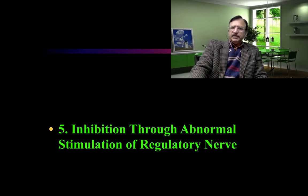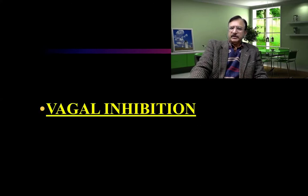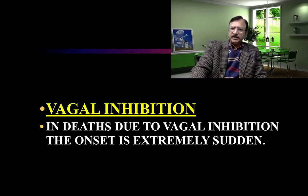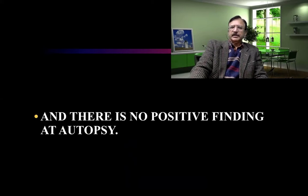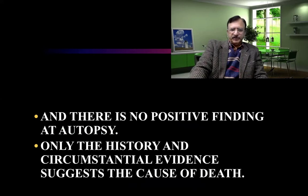Inhibition through abnormal stimulation of the regulatory nerve, like vagal inhibition, can also cause sudden death. In deaths due to vagal inhibition, the onset is extremely sudden because of the excitation or stimulation of the trigger zones, and there are no positive findings at autopsy. Only the history and circumstantial evidence may suggest the cause of death.